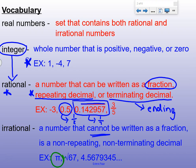Square roots of non-perfect squares, like the square root of 67, are also irrational. Also, if you see dot dot dot at the end of a decimal, that means it is non-terminating — it does not stop. And since there's no line over it, it means it's not repeating, which makes it irrational.